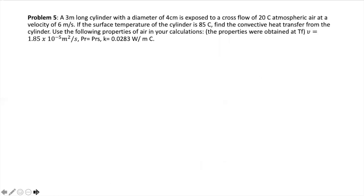Let's solve another problem. We have a 3-meter-long cylinder with a diameter of 4 cm exposed to a cross-flow of 20°C atmospheric air at a velocity of 6 m/s. If the surface temperature of the cylinder is 85°C, find the convective heat transfer from the cylinder. Properties of air are given at the film temperature, including Pr, Pr_wall, thermal conductivity, and viscosity. The first step, as always, is to get the Reynolds number to determine which Nusselt correlation to use.